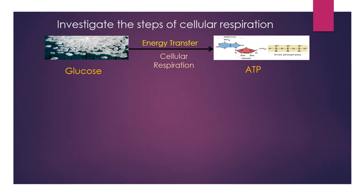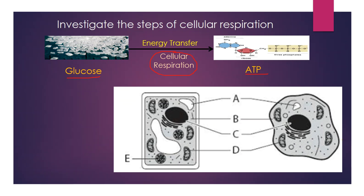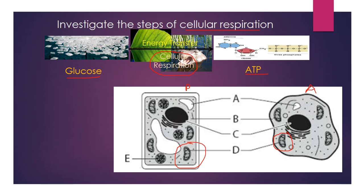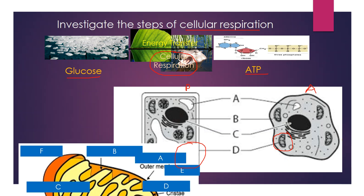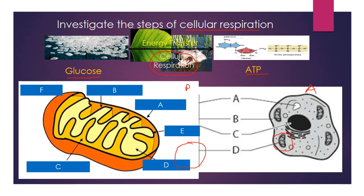Cellular respiration is the second step in the two-step process to transfer energy from sunlight all the way to ATP — specifically, it transfers energy from glucose to ATP. Looking at our two cells again, we notice that both cells have a mitochondria, which is the site of cellular respiration. Both plant and animal cells can perform cellular respiration.